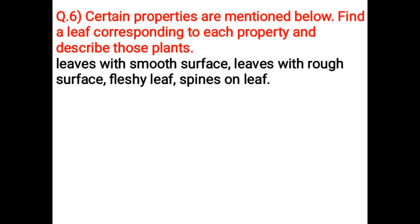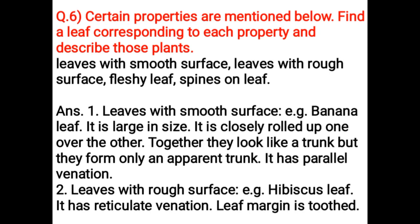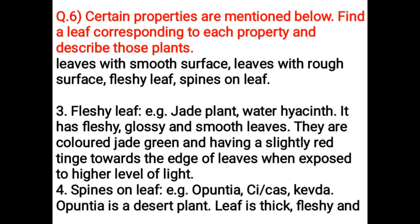Certain properties are mentioned below — find a leaf corresponding to each property and describe those plants. Leaves with smooth surface, leaves with rough surface, fleshy leaf, and spines on leaf. Banana leaf: It is large in size, closely rolled up one over the other; together they look like a trunk but form only an apparent trunk. It has parallel venation. Leaves with rough surface, for example, Hibiscus leaf — it has reticulate venation. Fleshy leaf, for example, Jade plant — it has fleshy, glossy and smooth leaves, colored jade green with a slightly red tinge towards the edge when exposed to higher levels of light.